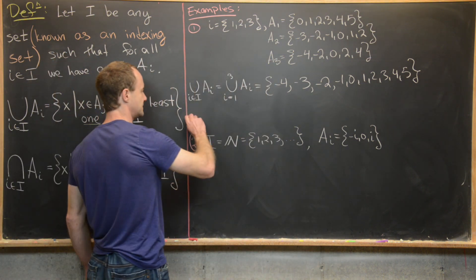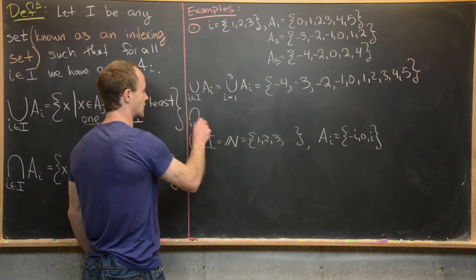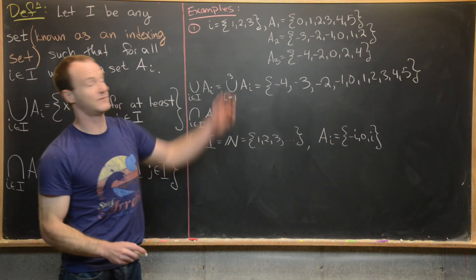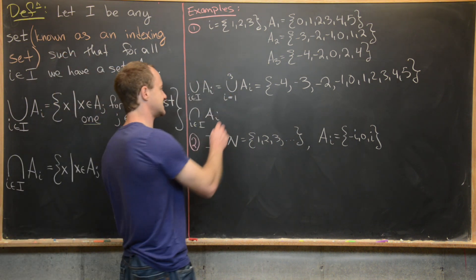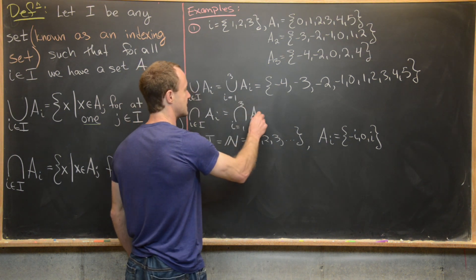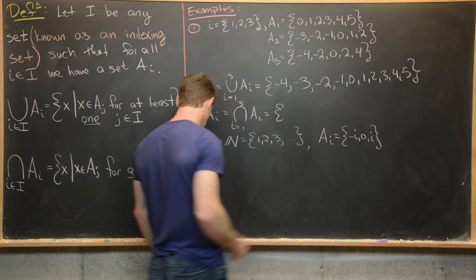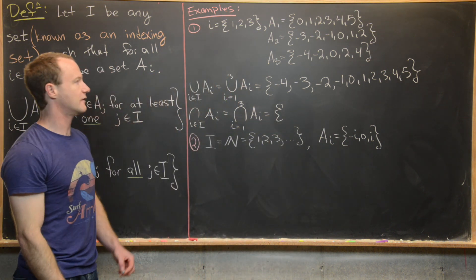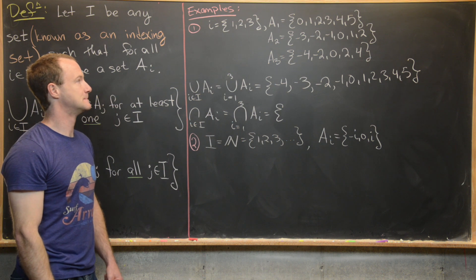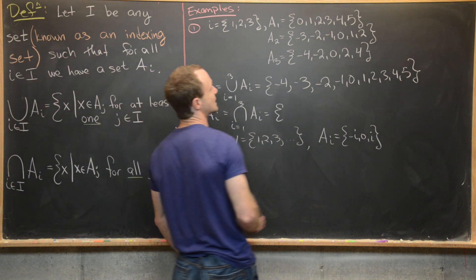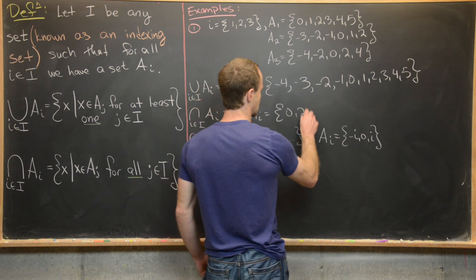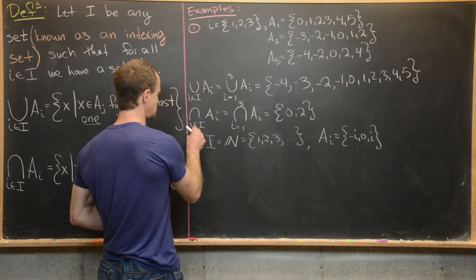Now let's look at the intersection over all i in this indexing set of A_i. Since we've got a small finite indexing set, we write this as the intersection from i = 1 to 3 of A_i. We want all numbers that are simultaneously in all of these sets. There are only two such numbers: 0 and 2. So the intersection is {0, 2}.